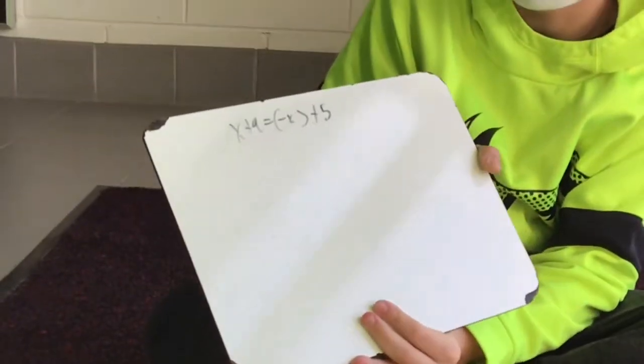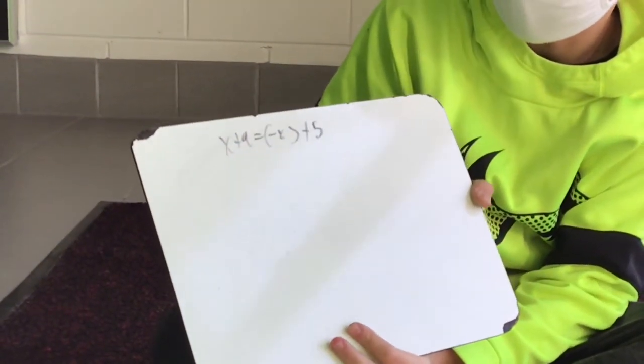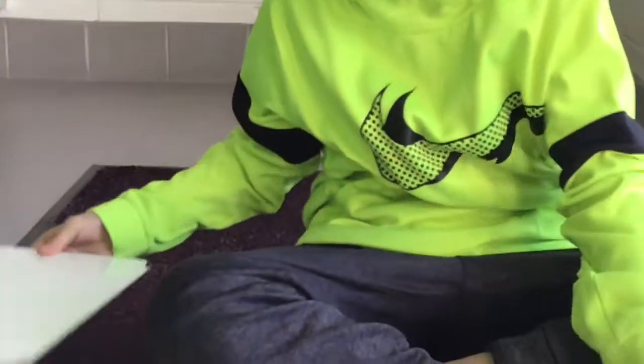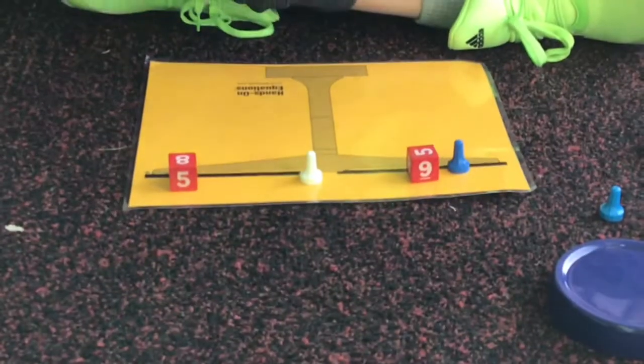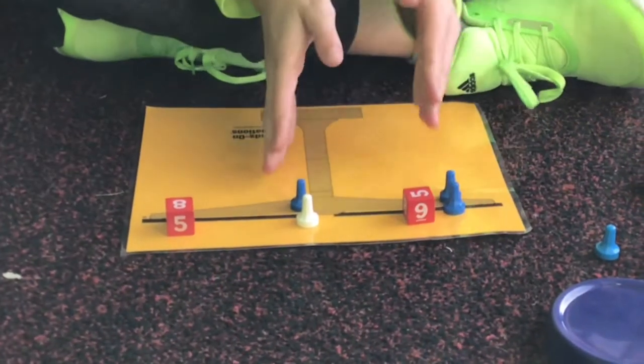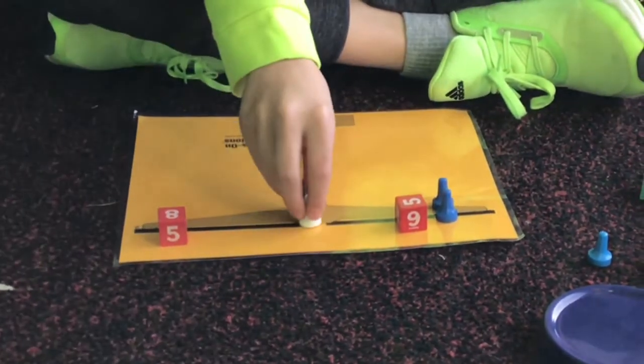My next problem is x plus 9 equals negative x plus 5. First thing I'm going to do here, I'm going to make one pair of 0, and add another x here to make it even. Take the pair of 0 away.